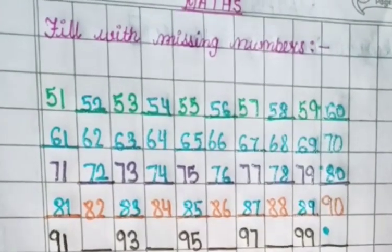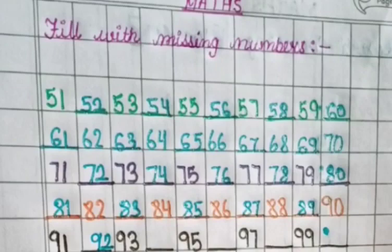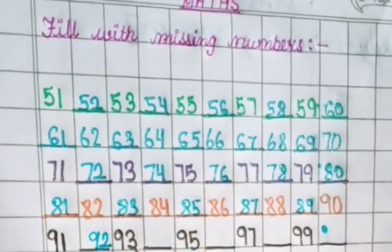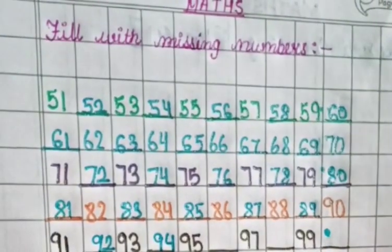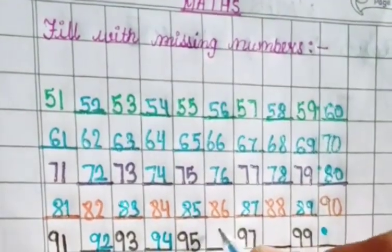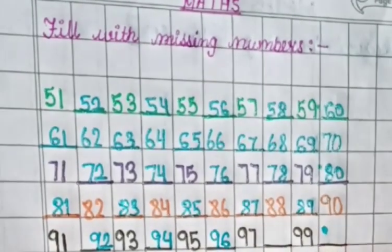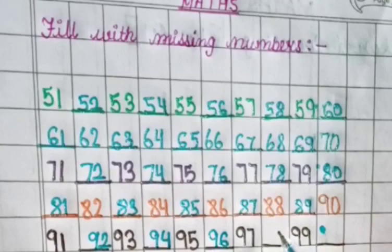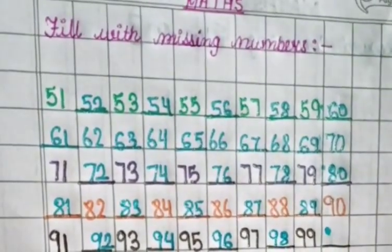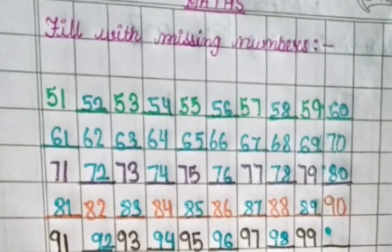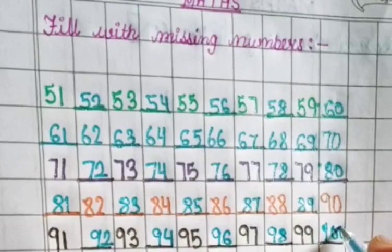9, 1, 91. 9, 2, 92. 9, 3, 93. 9, 4, 94. 9, 5, 95. 9, 6, 96. 9, 7, 97. 9, 8, 98. 9, 9, 99. 1, 0, 0, 100.